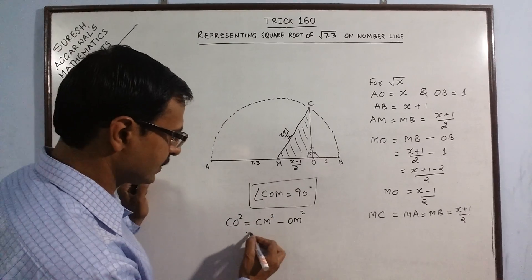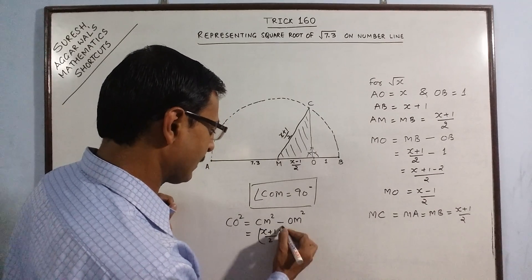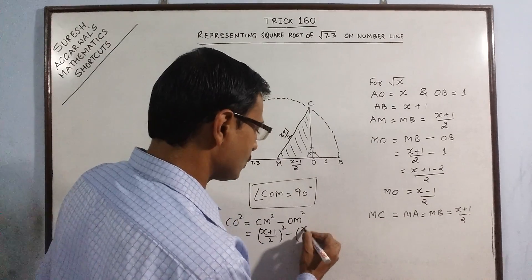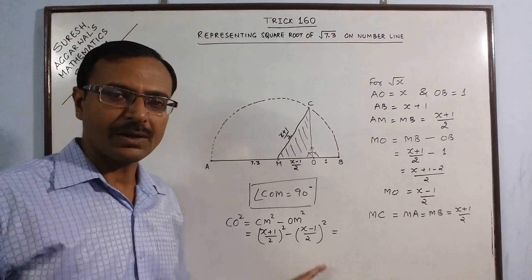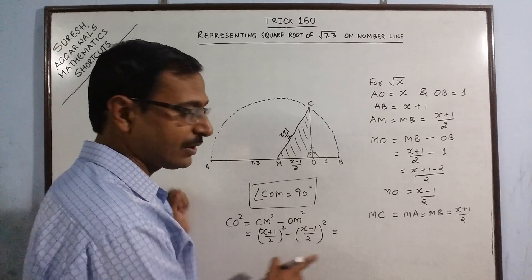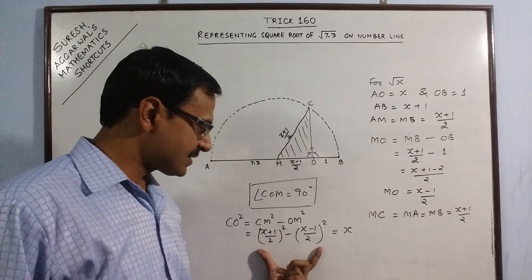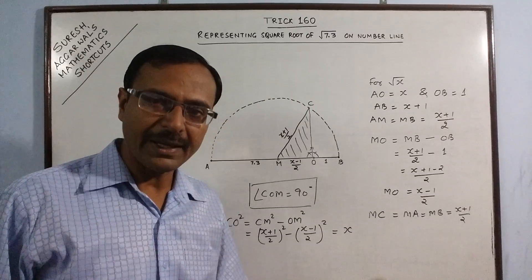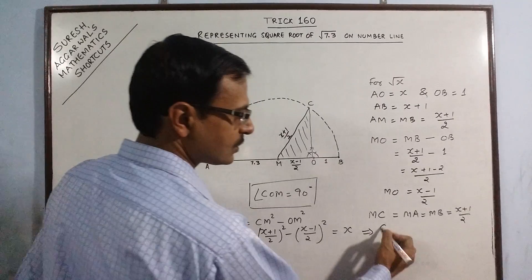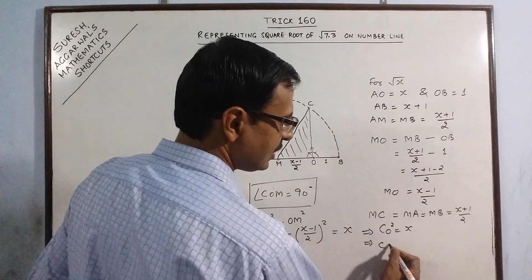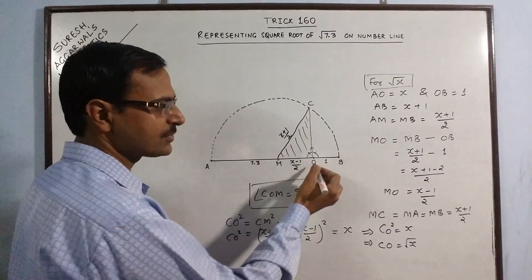If I substitute the values here, CM is (x+1)/2, so ((x+1)/2)², and OM is (x-1)/2, so ((x-1)/2)². You can apply A² minus B² here or you can solve it using the traditional method. The value of this will come out to be x. So CO² comes out to be x, which implies CO is actually √x, which was our question. So value of CO is √x.